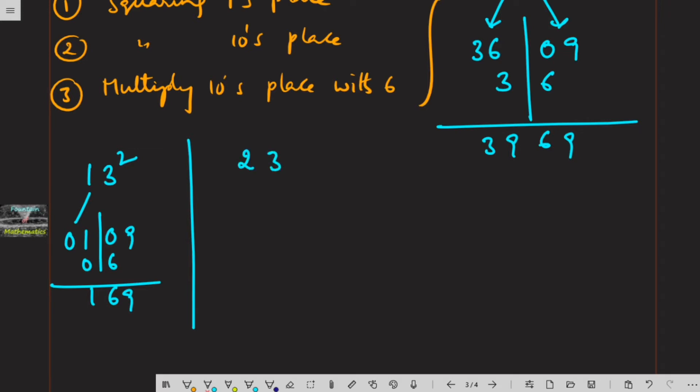Next, 23 square: 2 square is 04, 3 square is 09, and 2 into 6 is 12. So we can give the answer 529.